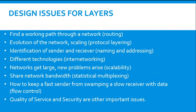There are issues for each layer. To find a working path, the network uses routing. Evolution of network scaling, protocol layering, and identification of sender and receiver — which is naming and addressing. Of course we have different technologies and internetworking. As network gets larger, problems of scalability arise. We have to share network bandwidth using statistical multiplexing. How to keep a fast sender from swamping a slow receiver is flow control. Quality of service and security are also important issues.